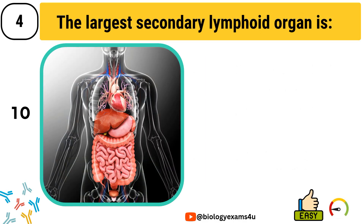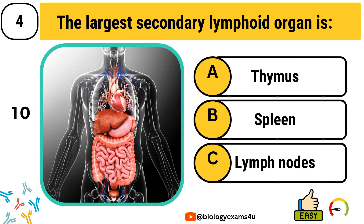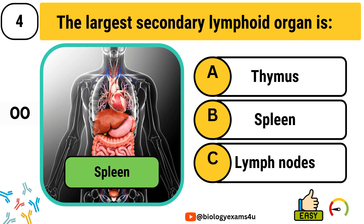Question number 4. The largest secondary lymphoid organ is: thymus, spleen, or lymph nodes. The correct answer is spleen.